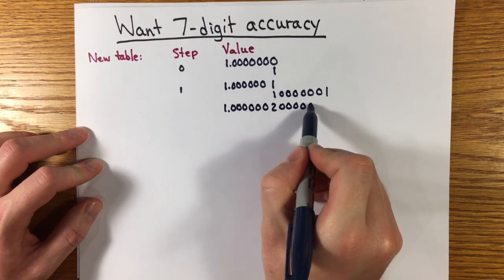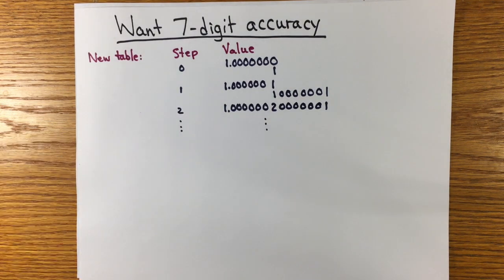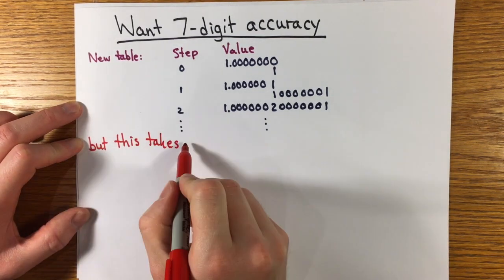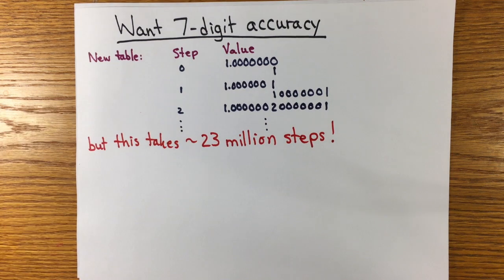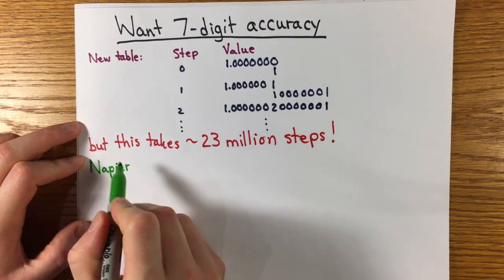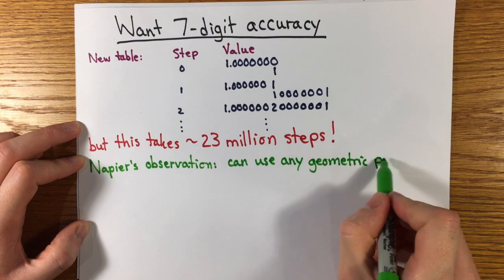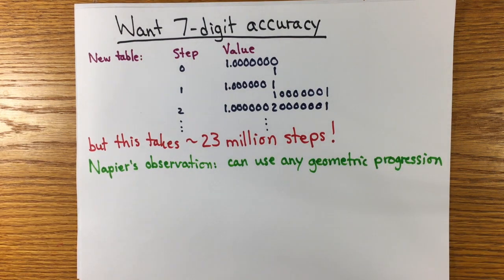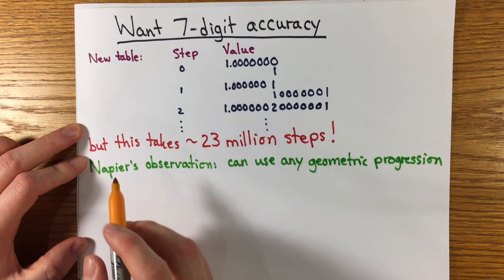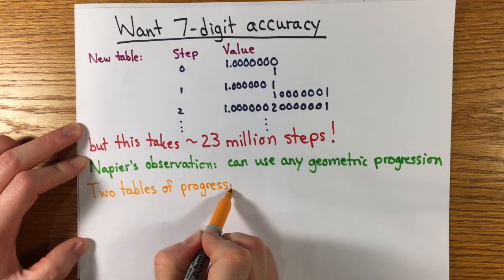The trouble is that this takes a long time. Computing powers of 1 plus 1 over 10 to the seventh, it will take over 23 million steps to reach 10. So Napier was forced to take a step back and develop some theory.